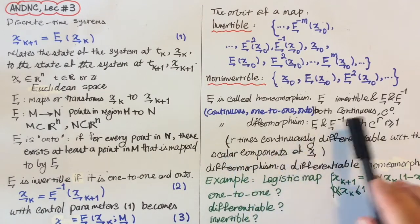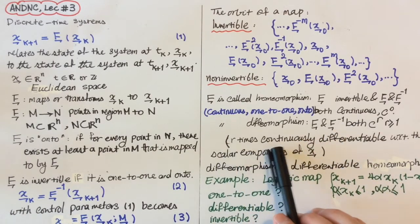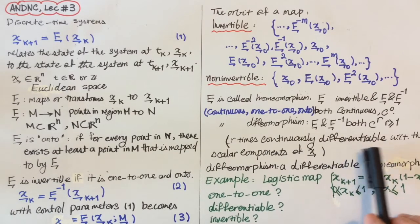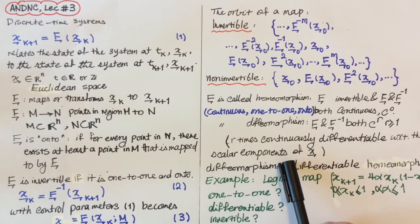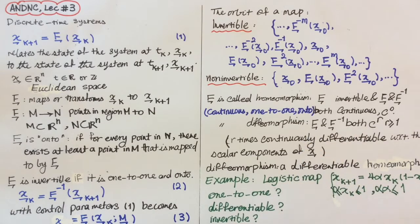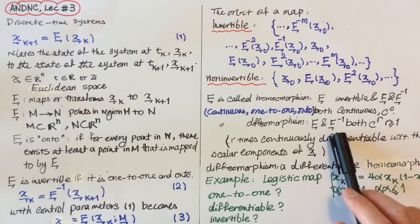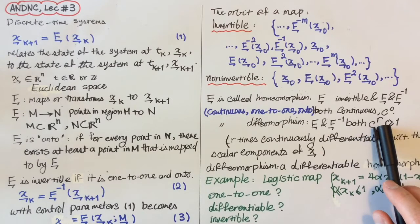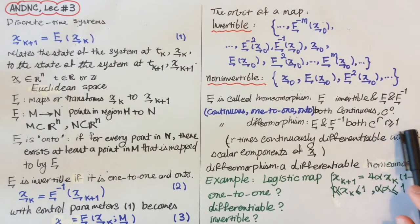F and F inverse are R times continuously differentiable with respect to the scalar components of X. X is our state vector—we have, for example, x_1, x_2, and x_3 as scalar components. If we can differentiate F with respect to x_1 again and again, then we say that F and F inverse are both C^R and R is larger than or equal to one.